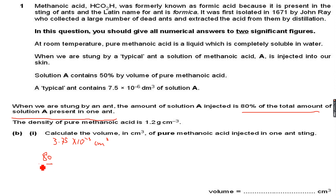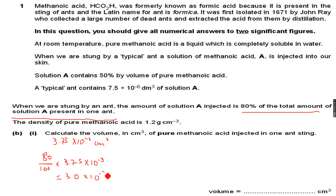So 80% of this pure methanoic acid is injected into us: 80/100 × 3.75×10⁻³ = 3.0×10⁻³ centimeter cube. This is the volume of pure methanoic acid injected into us in one ant sting.